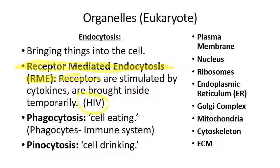HIV, the human immunodeficiency virus, exploits receptor-mediated endocytosis to get inside immune cells. HIV has proteins on its surface that resemble cytokines meant to go into those cells, so the cell thinks the virus is a legitimate signal and internalizes it. It's basically a letter bomb — you open the door, there's a parcel with your address, you take it inside and open it and it kills you. HIV exploits receptor-mediated endocytosis to get inside and destroy immune cells.